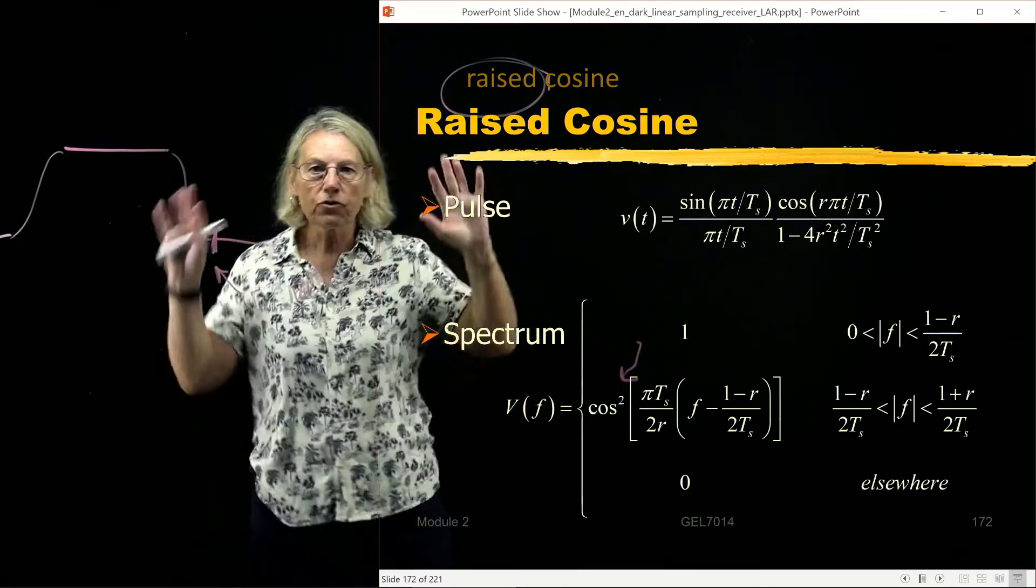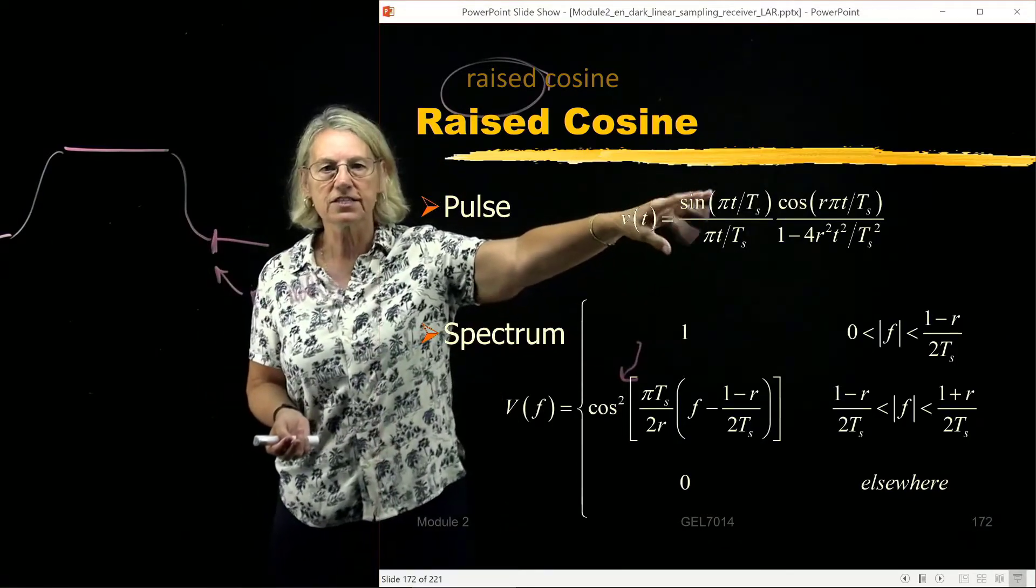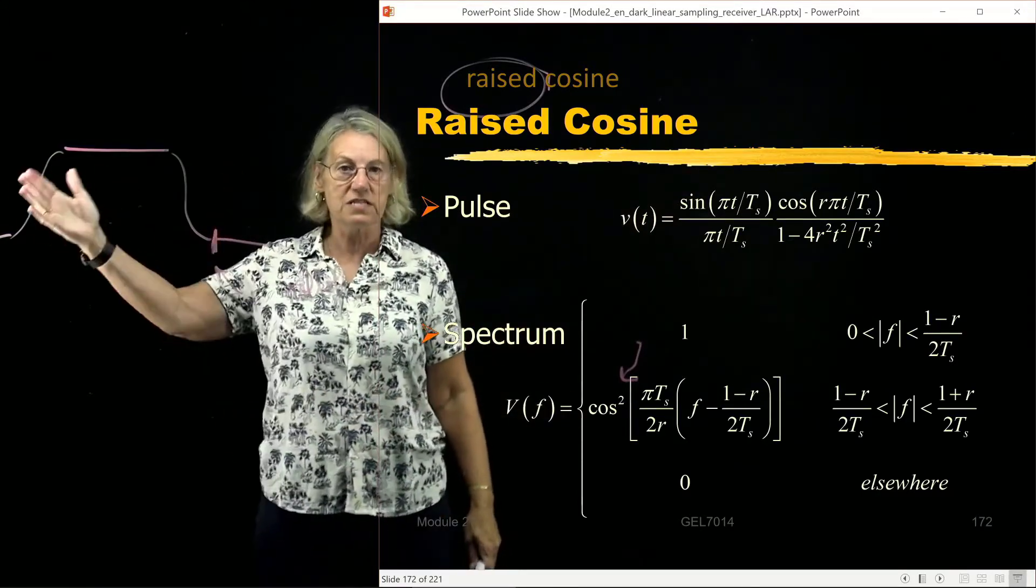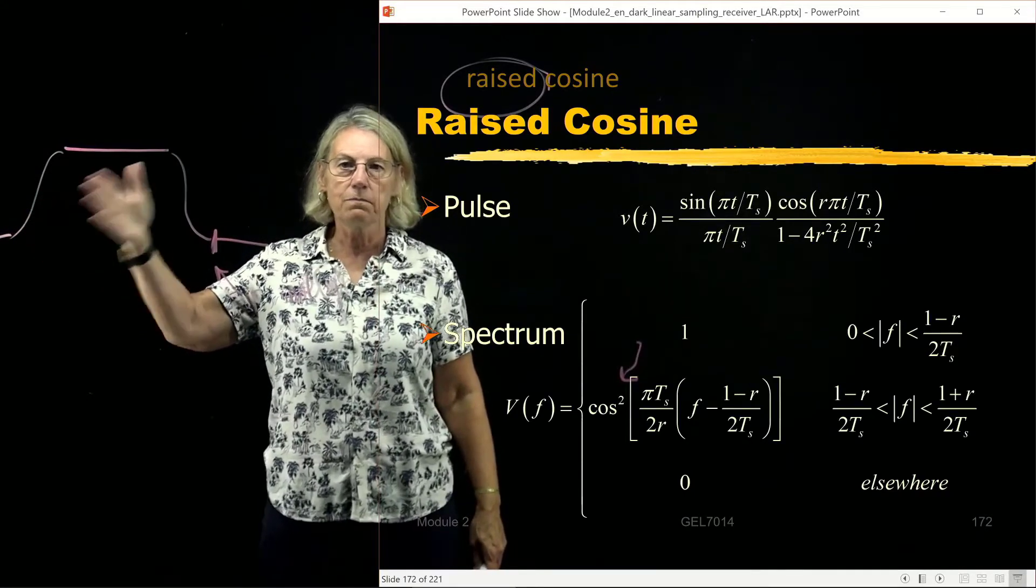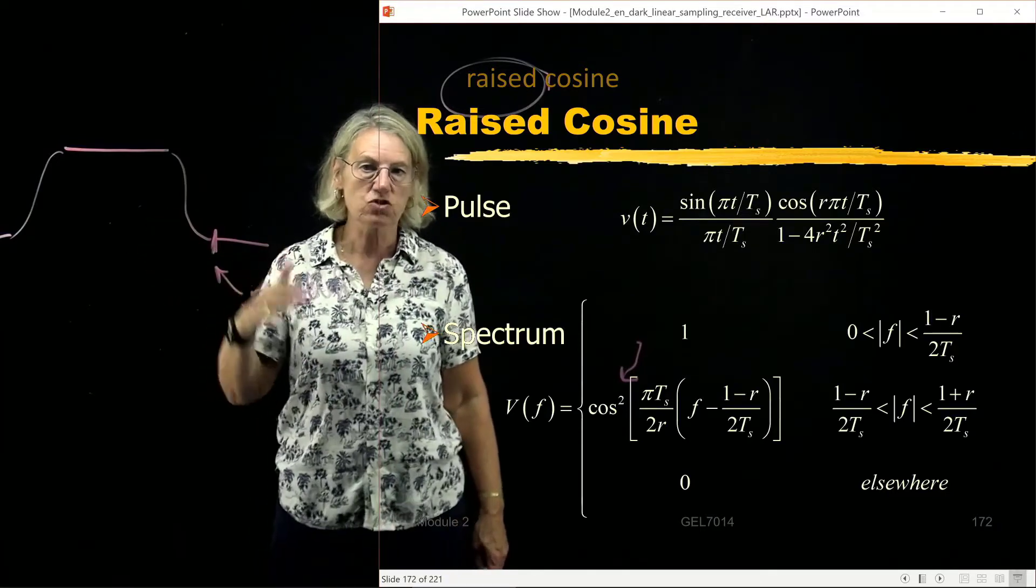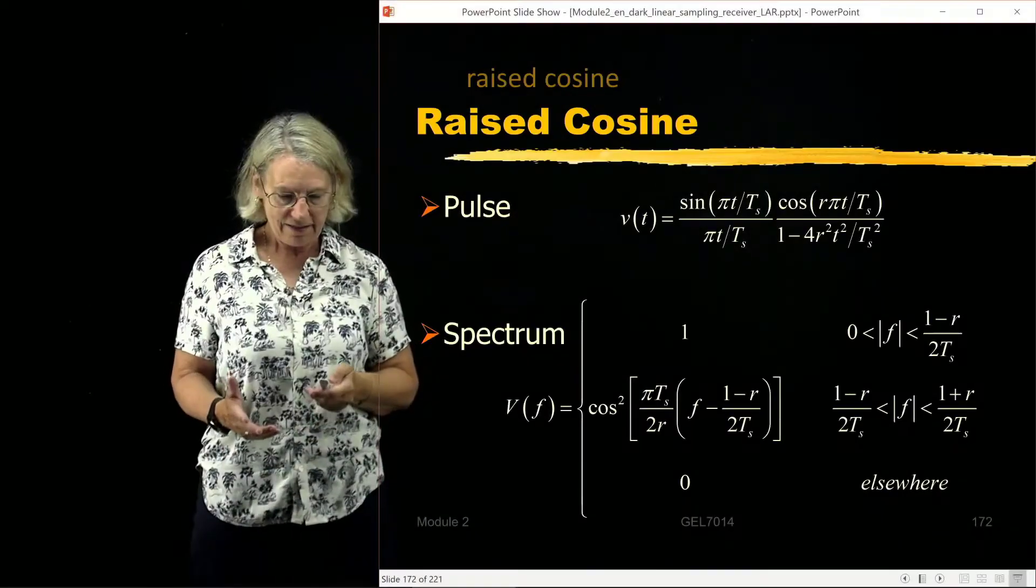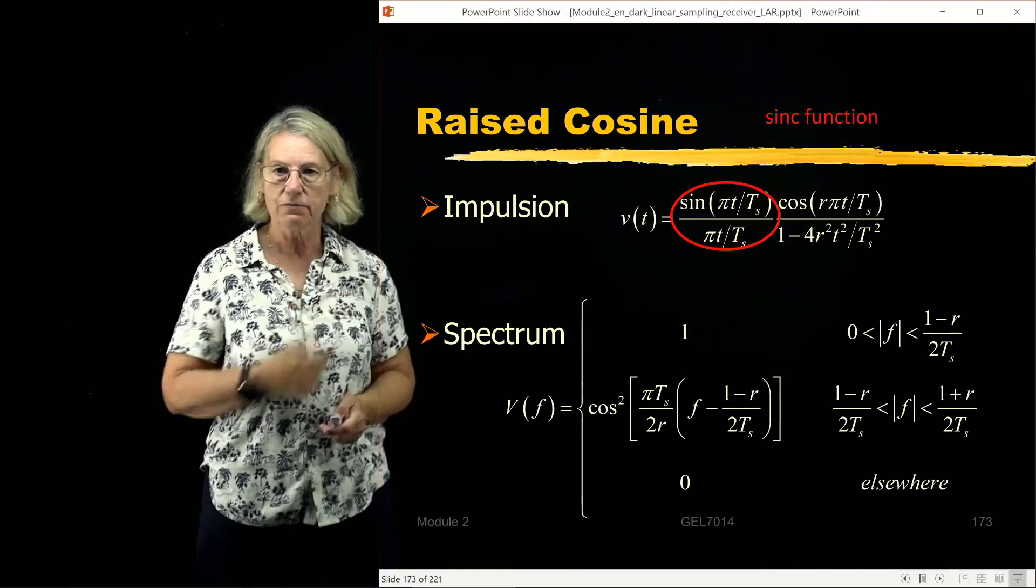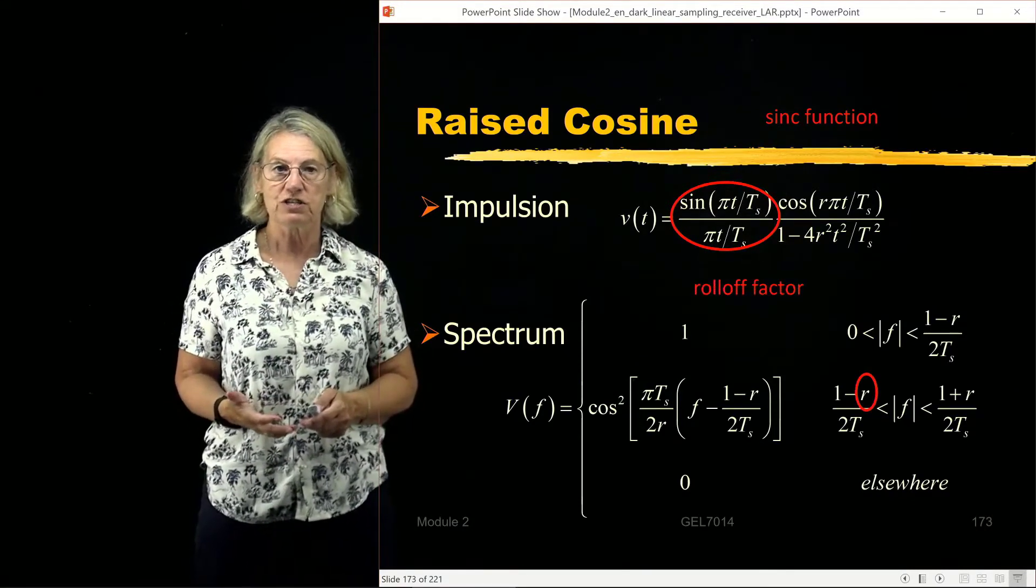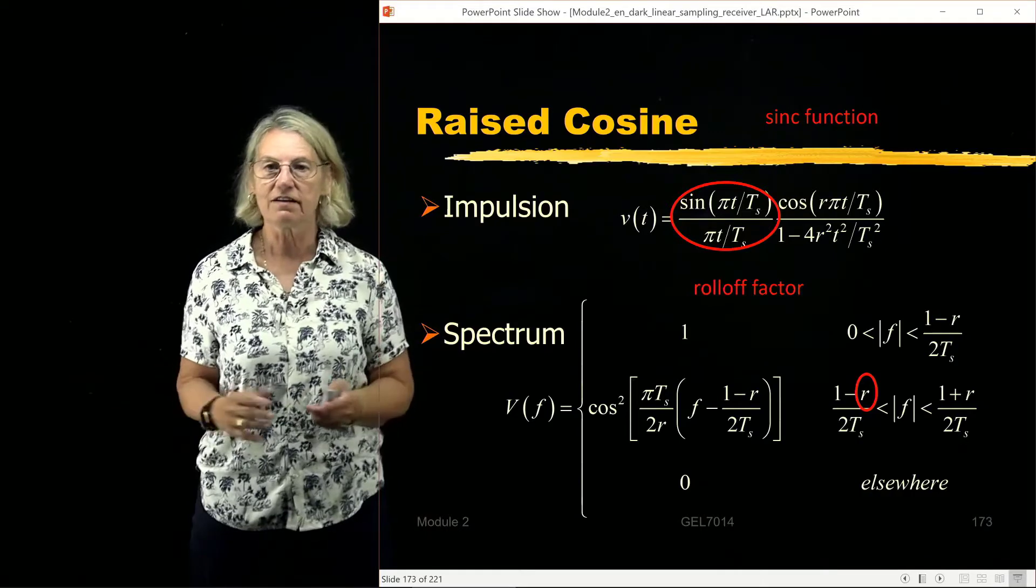So this is like an overview of what we do with the raised cosine. We have a pulse which is somehow related to the sinc function in the time domain, and in the frequency domain we have a bandwidth-limited signal, but it's not the minimum bandwidth. There is some extra, and that extra is determined by this parameter we call the roll-off. There is a sinc function embedded in the raised cosine, and there is this parameter, the roll-off factor, which enters into the time domain as well as frequency domain characteristics of this pulse.